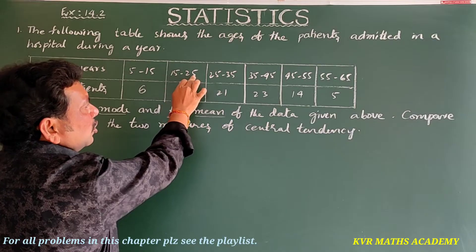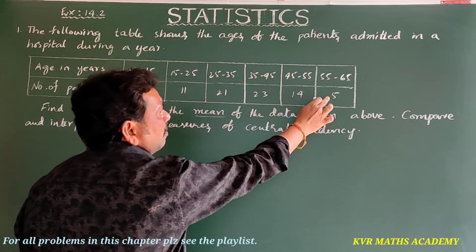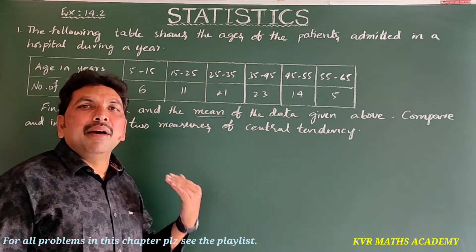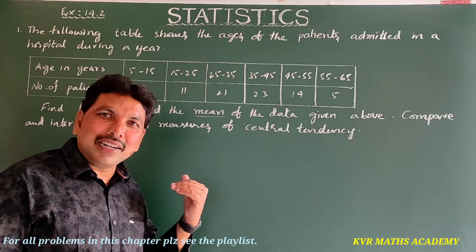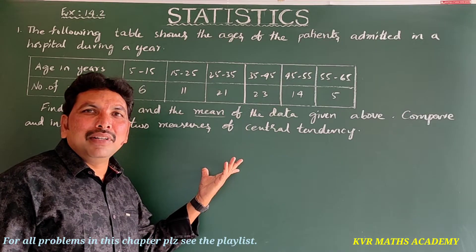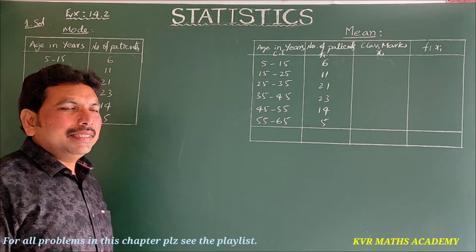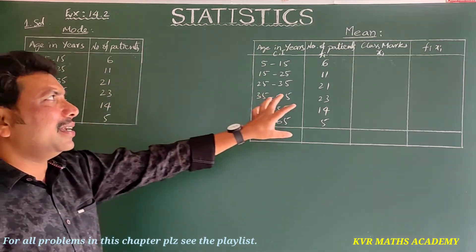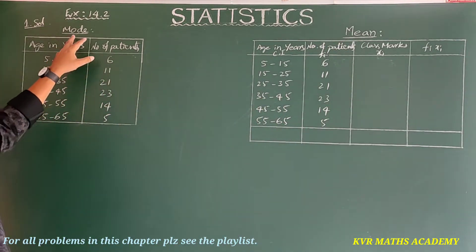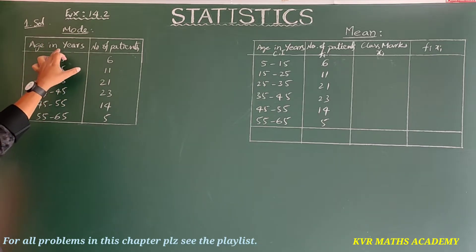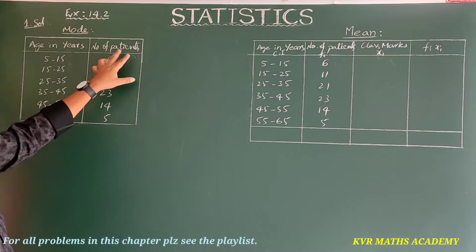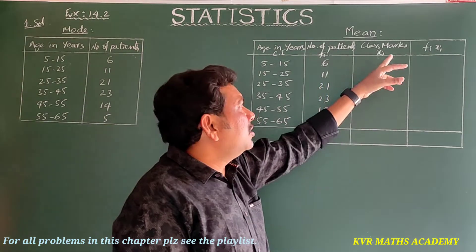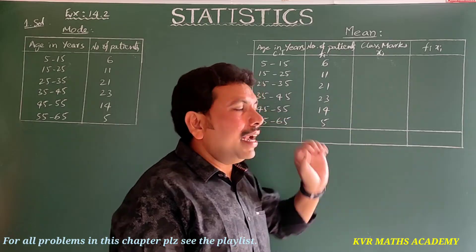For this table we have to find the mean and mode. I have drawn two tables — one for mode and one for mean. The mode table has class intervals (CI) and frequency (number of patients). For the mean, I will use the direct method, so I have taken an xi column.